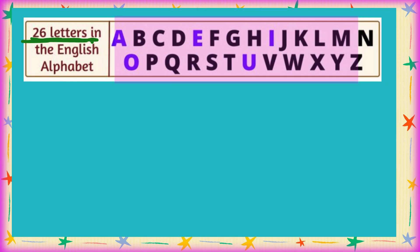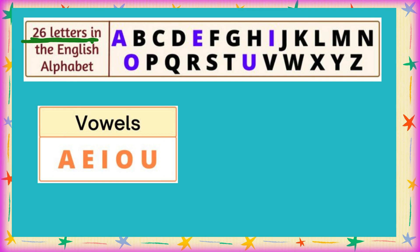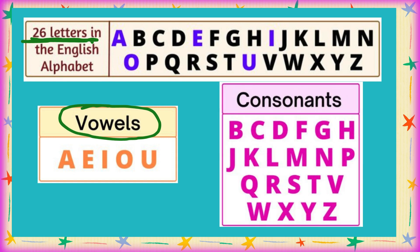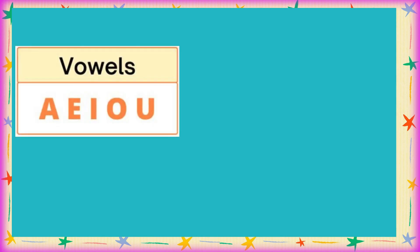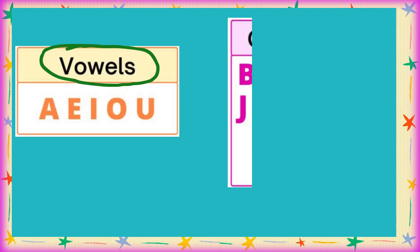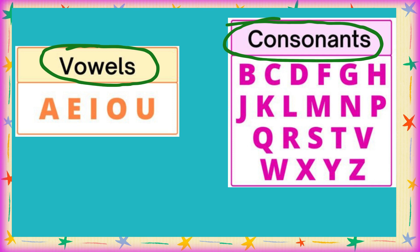इनको हम vowels बोलते हैं। और इनके अलावा जो बच गए — B, C, D, F, G, H, J, K, L, M, N, P, Q, R, S, T, V, W, X, Y, Z — यह सारे consonants होते हैं। Vowels कितने होते हैं? 5. Consonants कितने होते हैं? 21. Singular और plural क्या होता है यह भी जान लिया। Now we can see how to use A and AN.